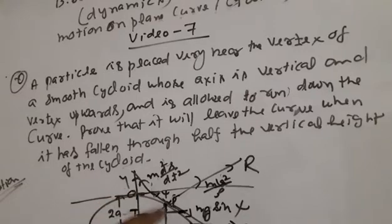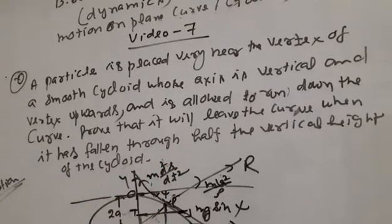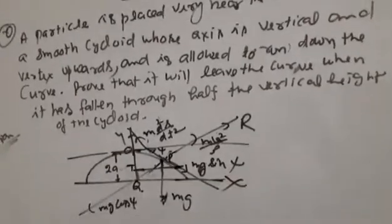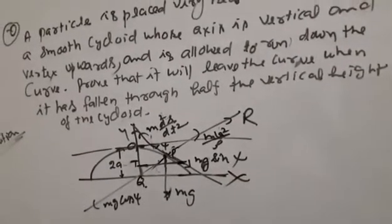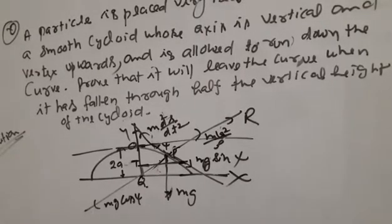The particle is allowed to run down the curve. We need to prove that it will leave the curve at a point where the vertical height is half of the vertical height of the cycloid — that is, the particle will move from the vertex through half the vertical height.